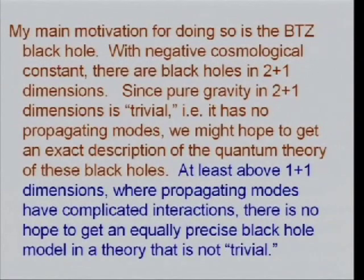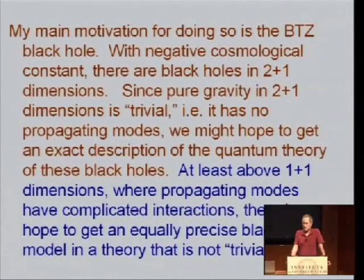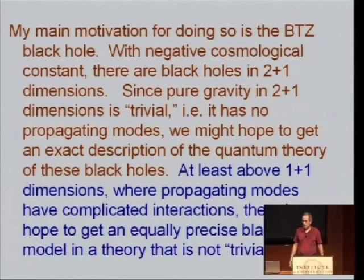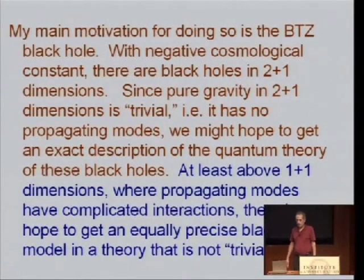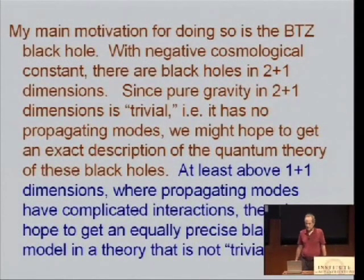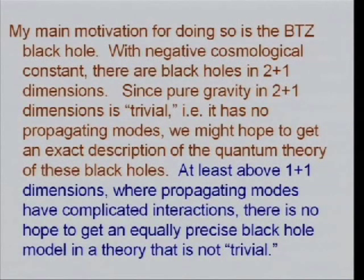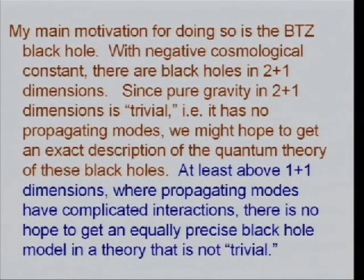The main reason I've chosen to look at this problem again is something called the BTZ black hole — Bañados, Teitelboim, and Zanelli — introduced around 1992. When the cosmological constant is negative, there are black holes in 2+1 dimensions, not when it's zero or positive. Since pure gravity in 2+1 dimensions is trivial, meaning it has no propagating modes and no gravitons, we might hope to solve it and thereby get an exact description of a quantum theory with black holes.